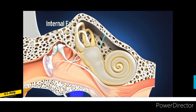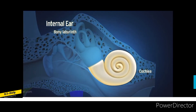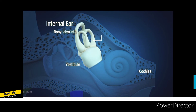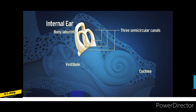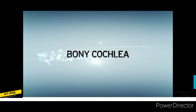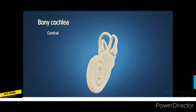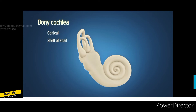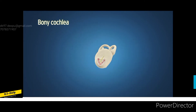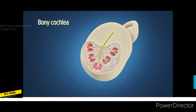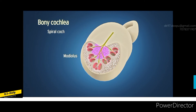The bony labyrinth consists of three parts: cochlea, vestibule, and three semicircular canals. The bony cochlea is conical in shape and resembles the shell of a snail. It consists of a central bony column called the modiolus and a spiral cochlear canal which takes around two and three-fourth turns around the modiolus.